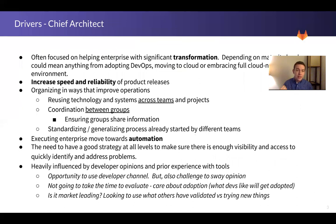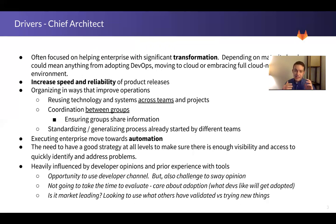What are their drivers — what motivates them? The chief architect is often focused on transformation. This depends on the organization's maturity level: they might just be adopting DevOps, moving to the cloud, or embracing full-on cloud native. But wherever they're at in that maturity model, the chief architect cares about driving that strategy and transforming the organization. They definitely care about increasing the speed and reliability of product releases — moving faster and doing so more reliably is part of their strategy.